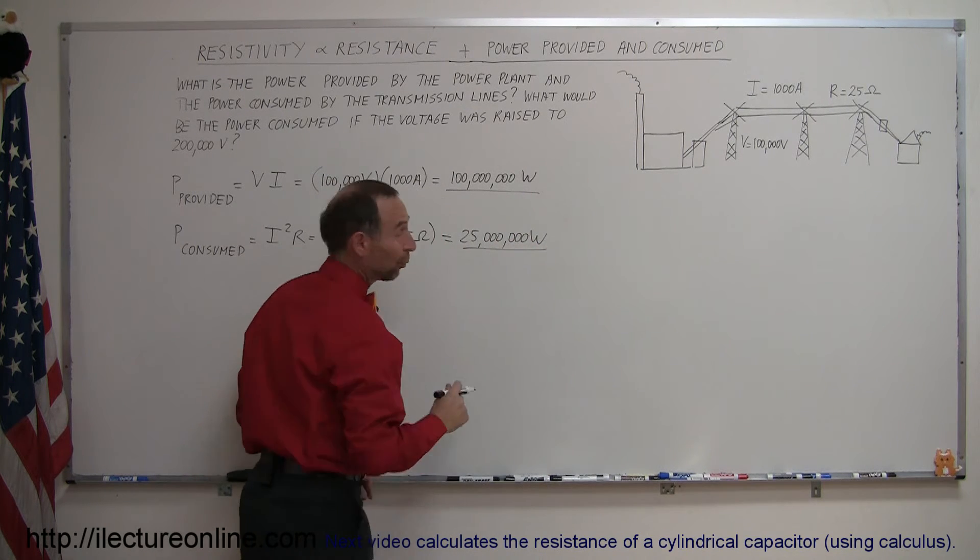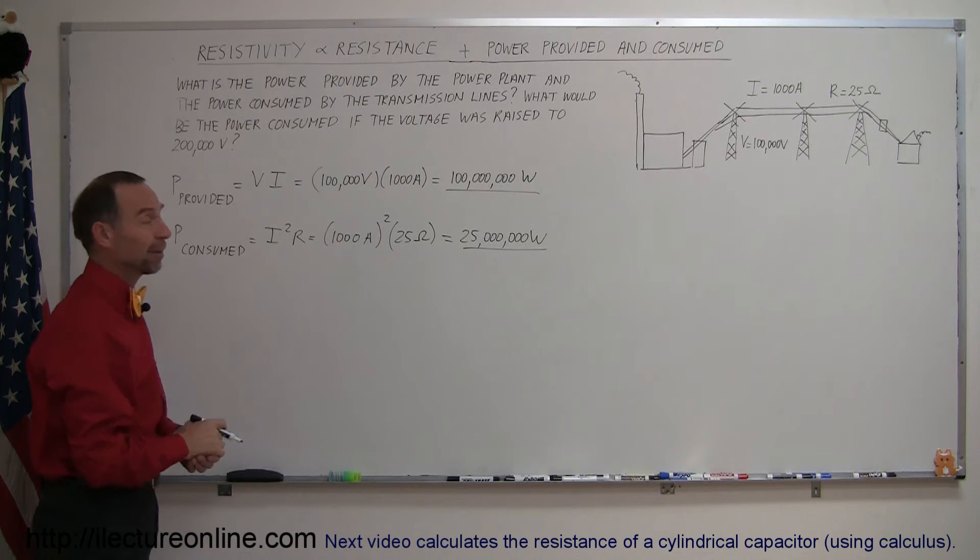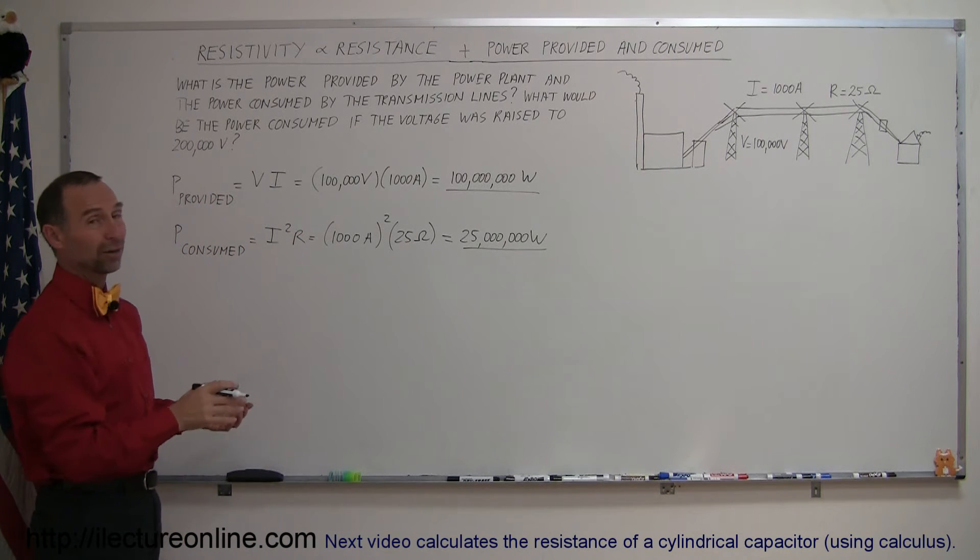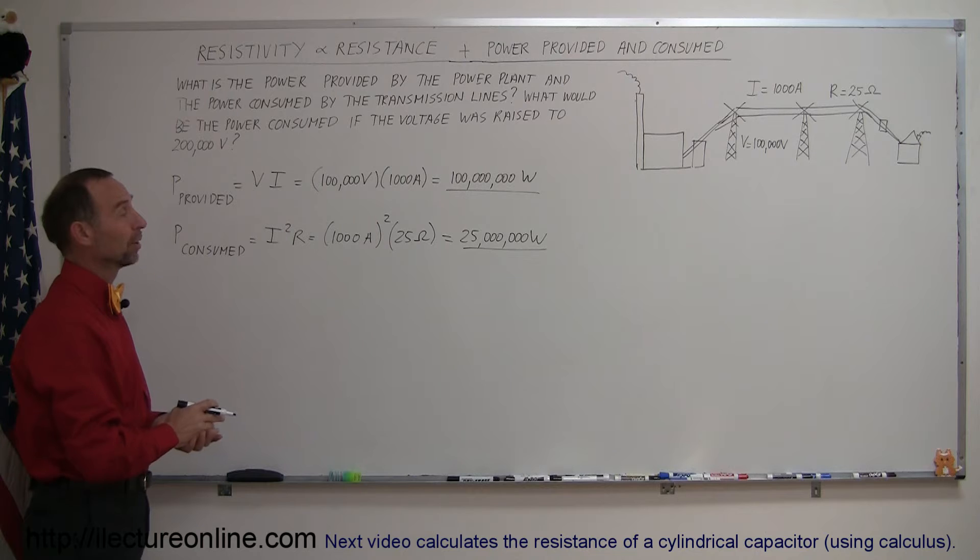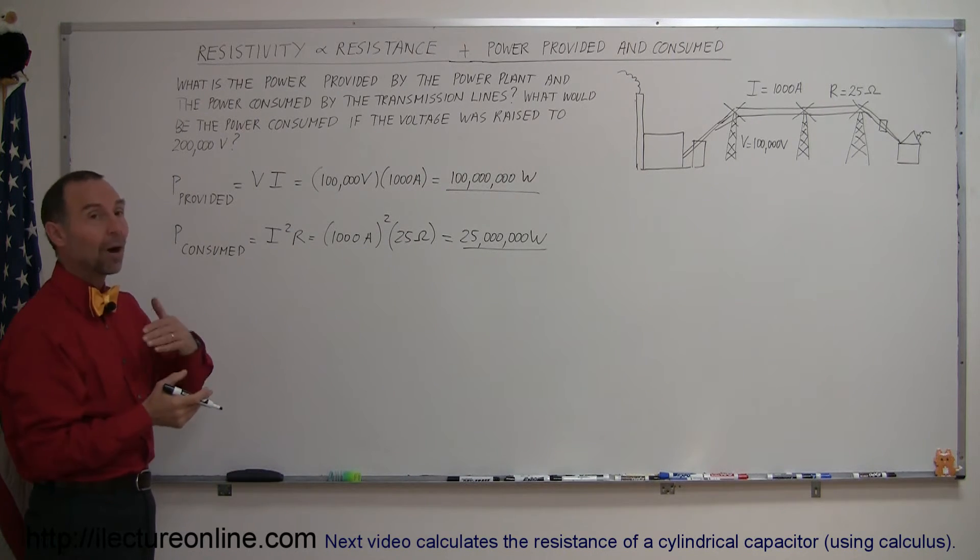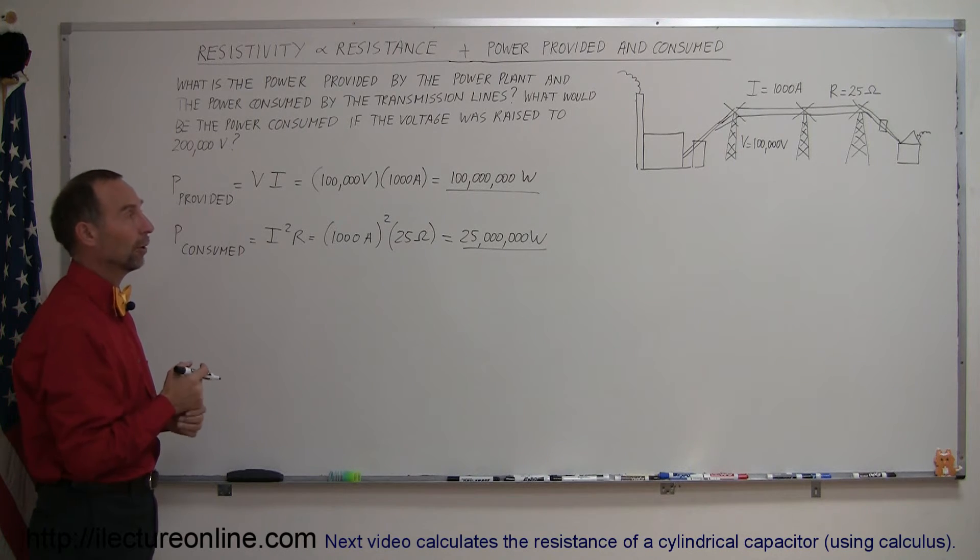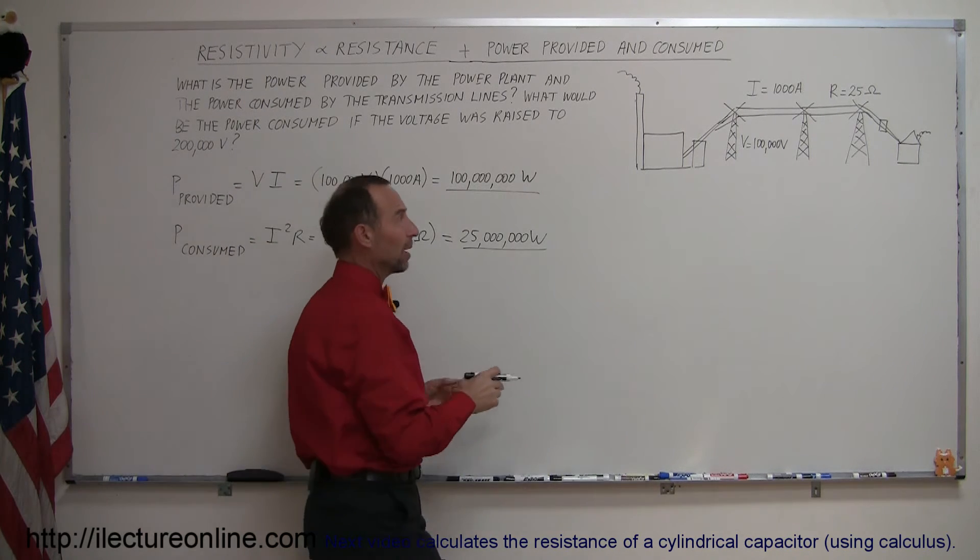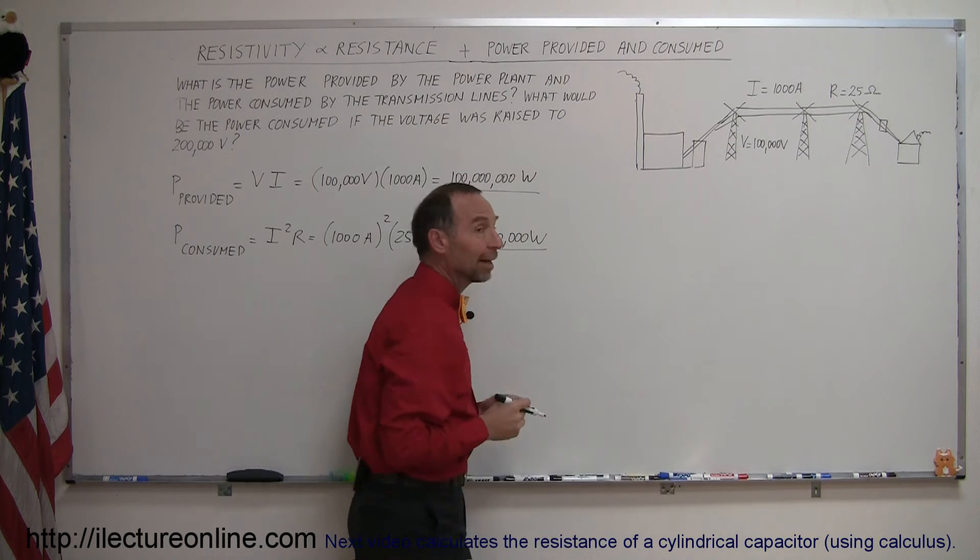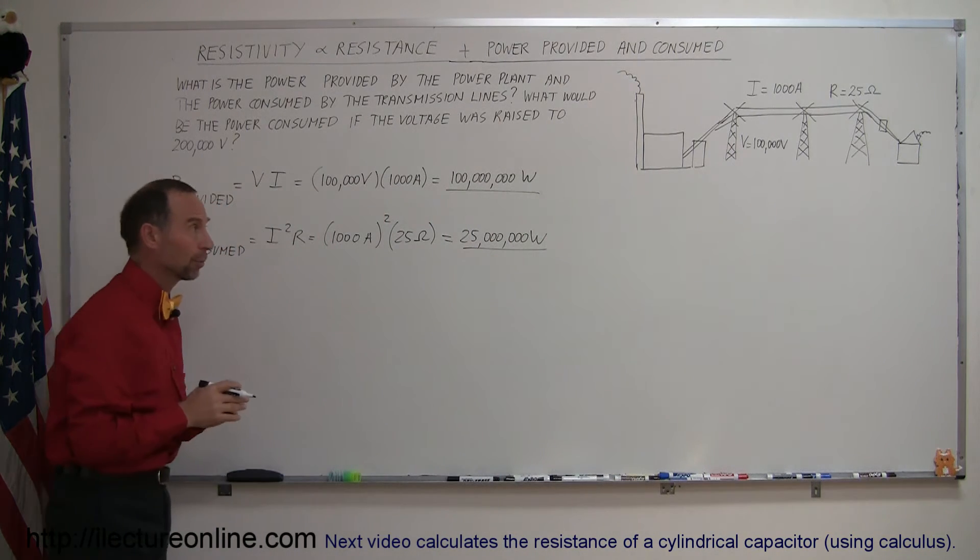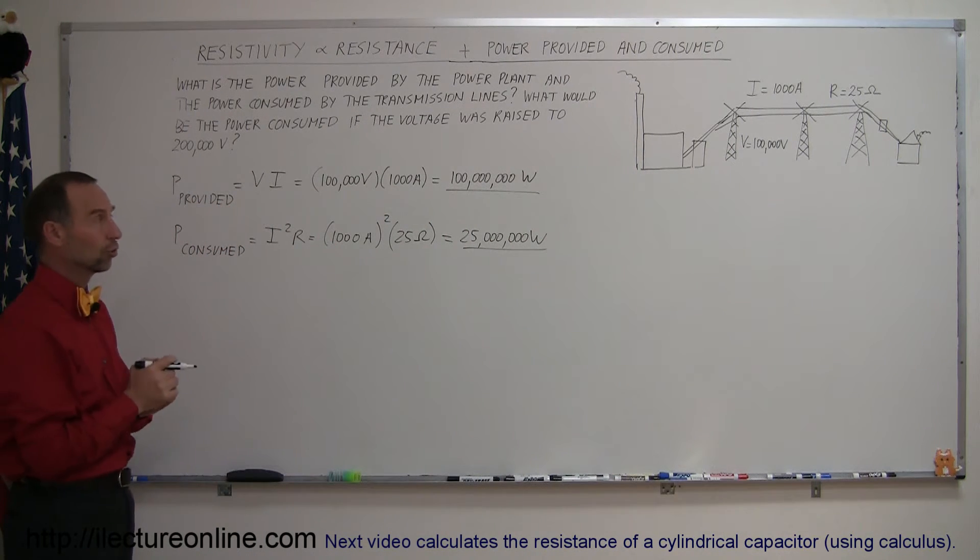Wow! That's one quarter of the power provided by the factory that would be consumed by the wires, which would not be a good thing. So the way they solve that problem is they raise the voltage on the wires, they make them into higher and higher transmitters of power. They bring the voltage up to higher levels so that the power consumed by the wires can be reduced.